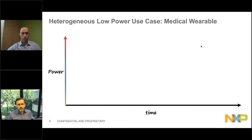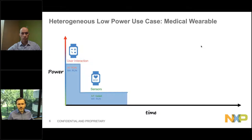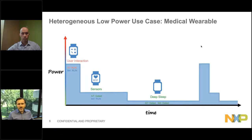Both standby and runtime power modes are very important. For a use case such as a medical wearable with lots of user interaction, you'll see the Cortex-A7 and Cortex-M4 both running. In another mode where there's no UI interaction but the display is still on, the A7 is gated and only the M4 is running. And for deep sleep modes — where you still need quick wake-up time and sensor measurement — many low-power applications have a duty cycle as low as 5 to 10%, so optimizing those modes is critical.